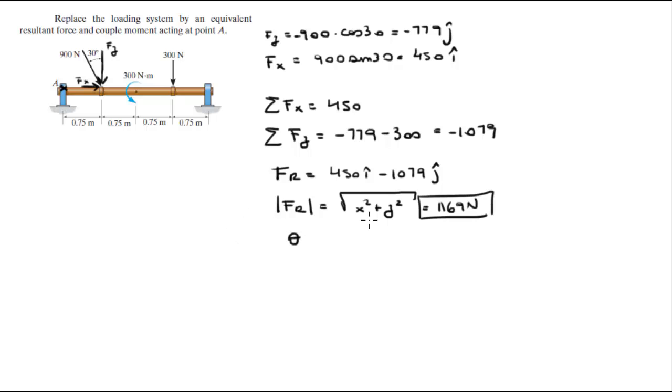And the angle, remember this is 450 going to the right and 1079 going down, so this is the resultant force. This is the angle, let's call it beta. It is equal to the tangent inverse of the Y component over the X component, and it comes out to be negative 67.4 degrees, negative because it's going down. The calculator should give you 67.4.